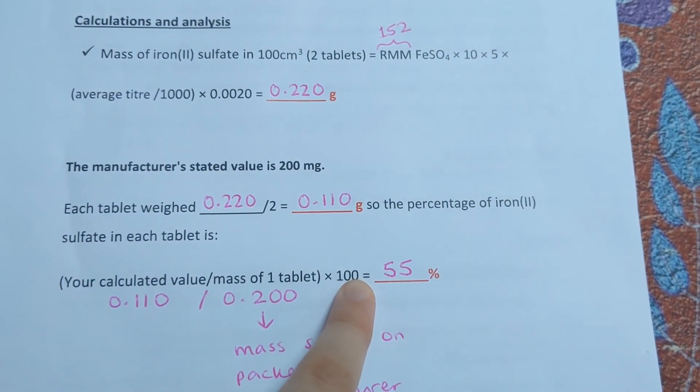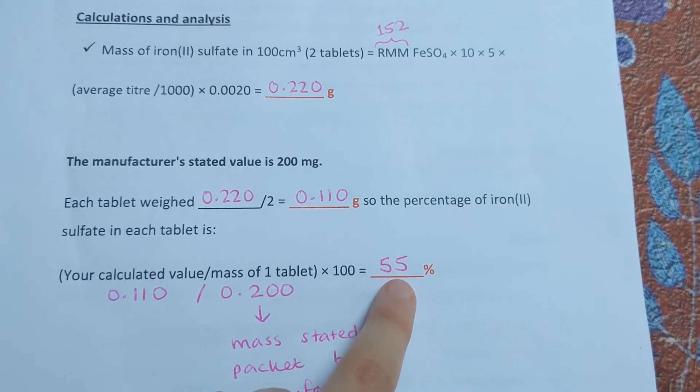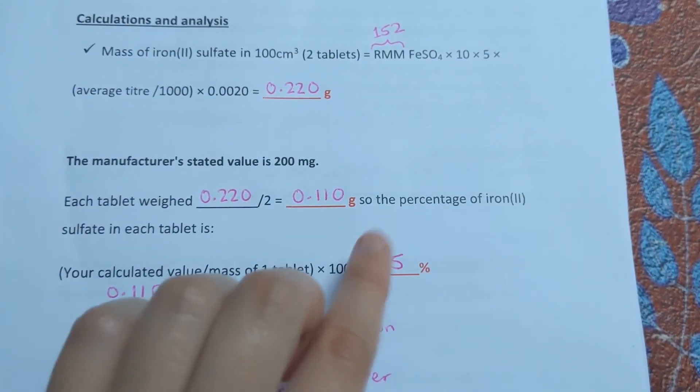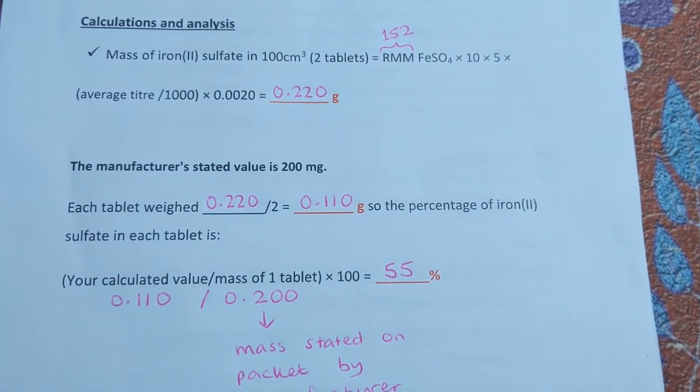I got 55%, so you should get something around 50-ish to 60-ish percent.